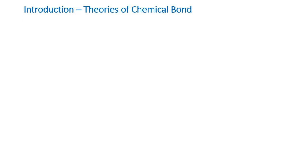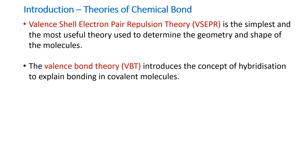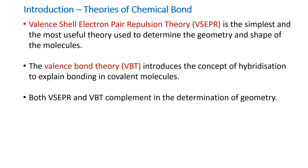A little bit of introduction to the theories of chemical bond. One of the foremost theories of chemical bond is the valence shell electron pair repulsion theory. This is one of the simplest theories because it can be used to determine the geometry and the shape of the molecules by just understanding the number of electrons in the valence shell. The advancement of this theory was the valence bond theory, wherein the concept of hybridization is introduced to explain covalent bonds. Both VSEPR theory and valence bond theory complement each other and help us in determining the geometry of the molecule.